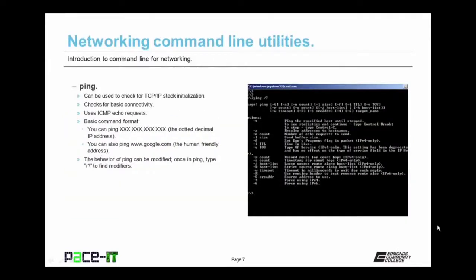The first command we'll discuss is ping. Ping can check for TCP/IP stack initialization if you ping 127.0.0.1. It's also used to check for basic connectivity between two nodes, which is useful when diagnosing network issues. It uses ICMP echo requests like a sonar system — sends a signal out and waits for a response. The basic format is: ping followed by the IP address in dotted decimal format, or you can use a user-friendly name like ping www.google.com. Its behavior can be modified — use forward slash question mark after typing ping to see available modifiers.